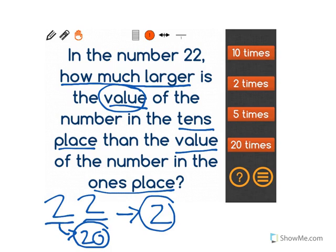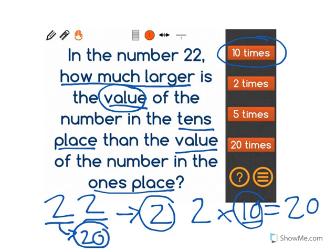So in order to go from 2 to 20, I'm going to have to multiply by 10, meaning that the number 22, the digit in the tens place, is 10 times greater than the digit in the ones place. Our answer is 10 times.